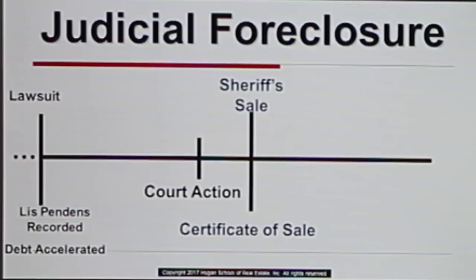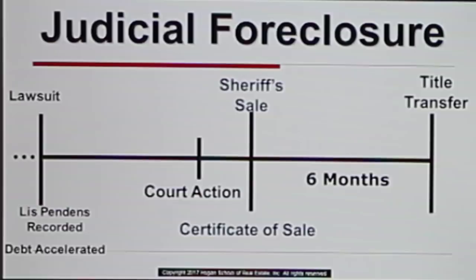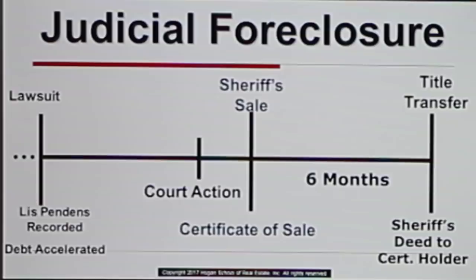At this point, a six-month statutory right of redemption begins. The law states the borrower has another six months, during which time, if they redeem the property, they pay all the money bid plus a penalty — essentially the bid amount plus interest. Then they can reinstate themselves in the property. However, if they don't redeem during that six months, at the end of the six months, the bidder returns, turns in the certificate of sale, and gets a sheriff's deed. After this six-month redemption period, the sheriff delivers the sheriff's deed, transferring ownership to the high bidder.